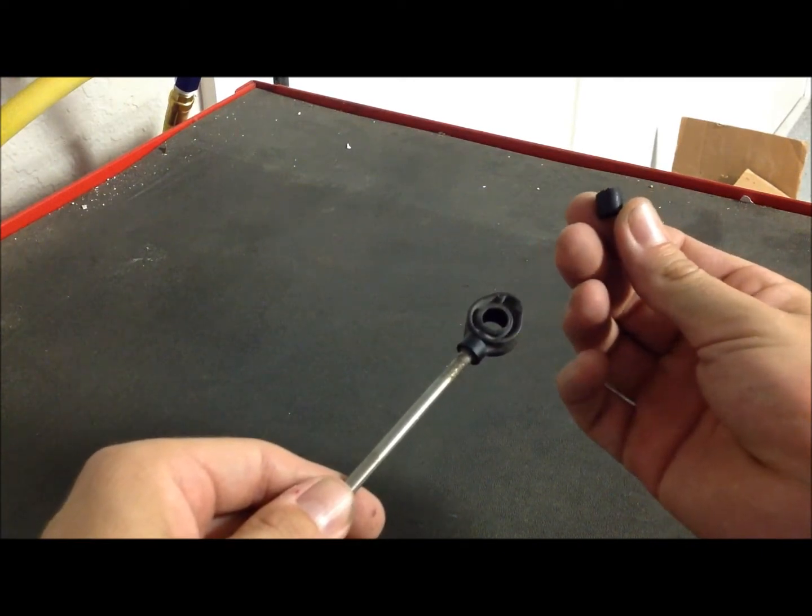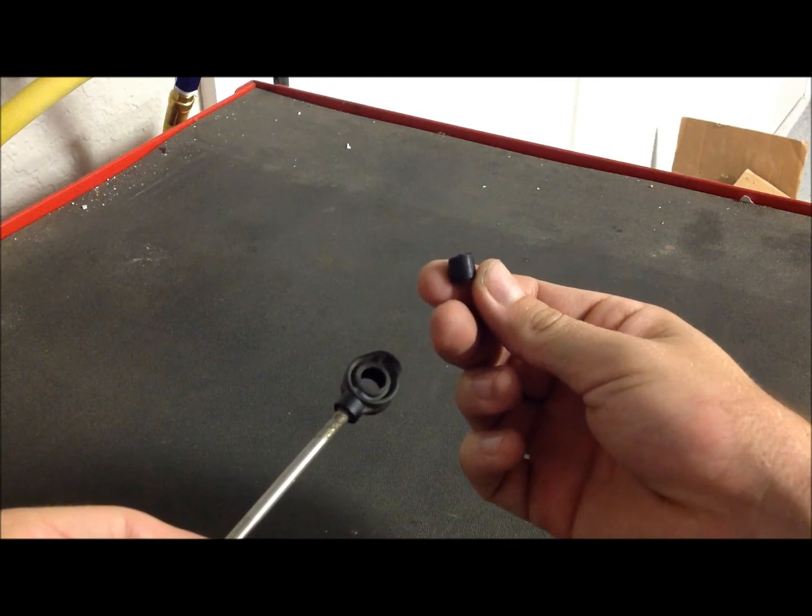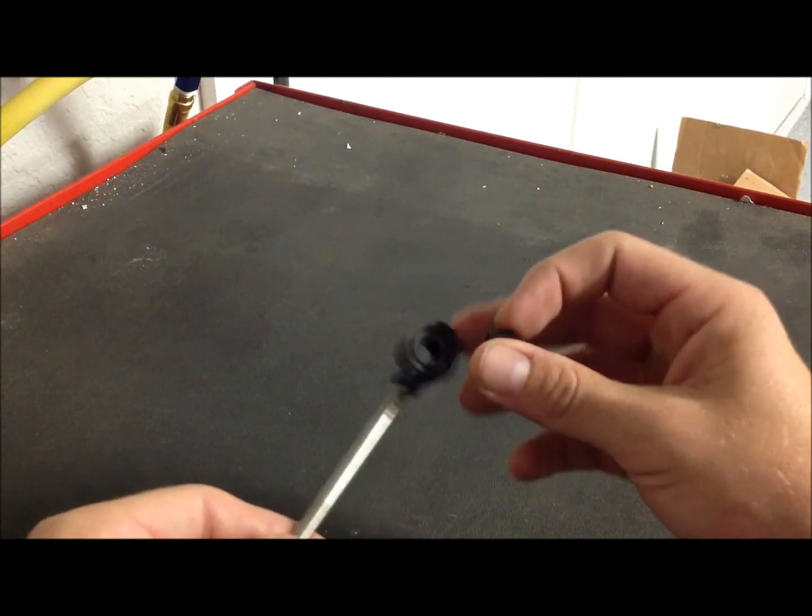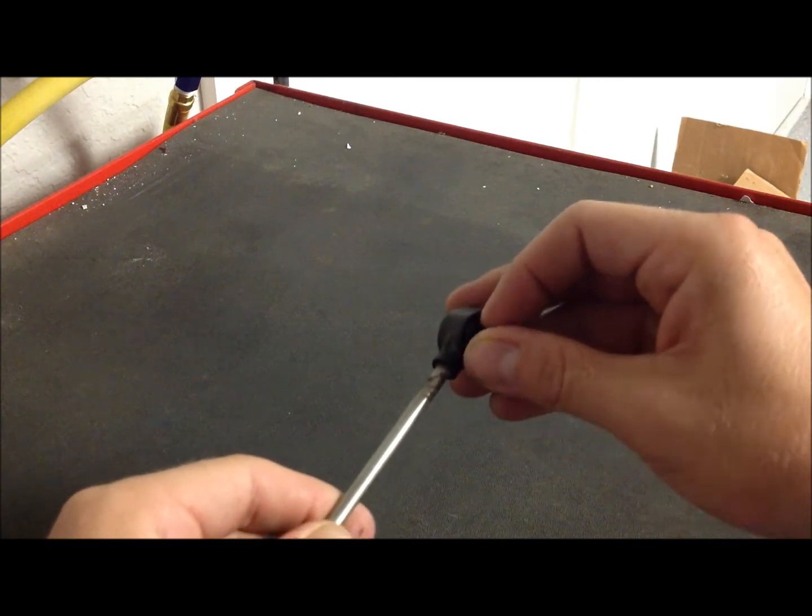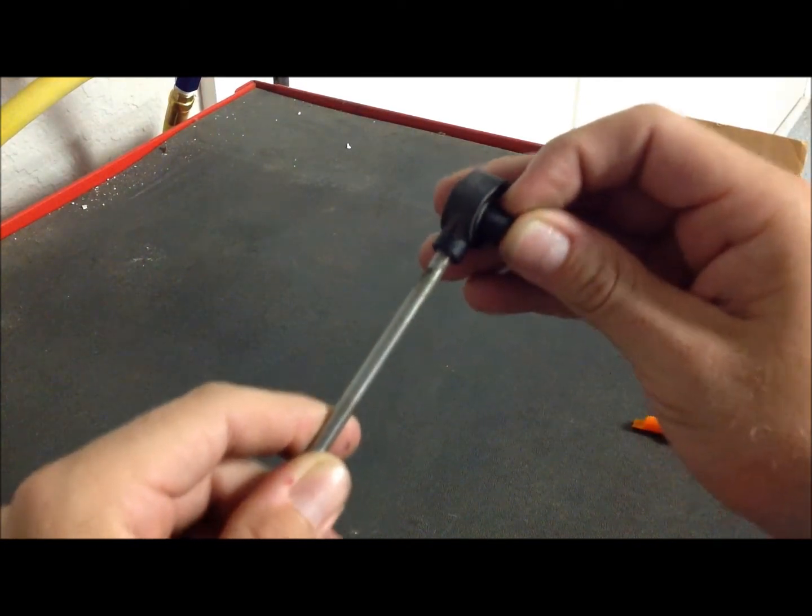Next, take the new bushing and starting with the tapered end, put it into the hole of the transmission cable end. This bushing goes in easiest when you put it in at an angle to start with.